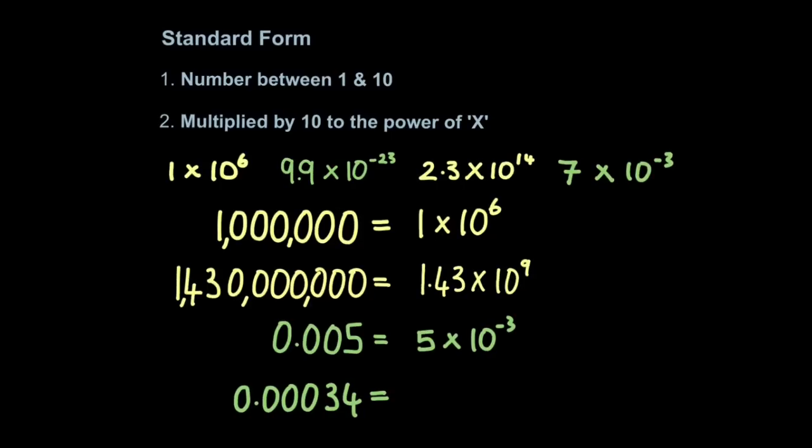And let's look at slightly more complicated ones, so 0.00034. Well, that would be expressed as 3.4 times 10 to the minus 4. Remember, I can't write 34 because the number has to be between 1 and 10 to make it standard form.